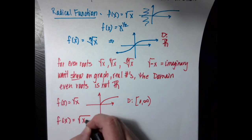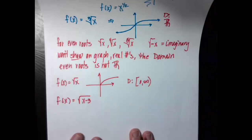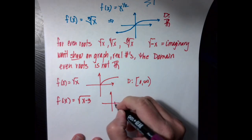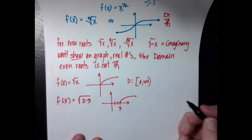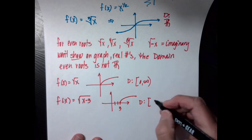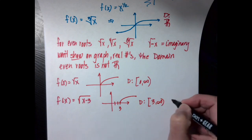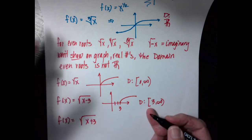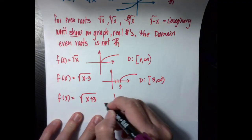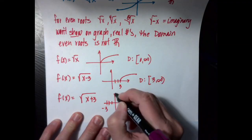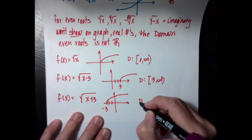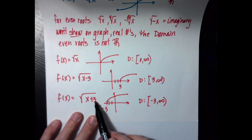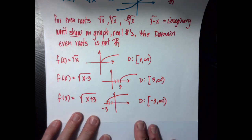Now we're going to translate things, just like we've done with every function we've studied. This is inside the function, which means it moves the opposite direction. So f of x equal to the square root of x minus 3 is going to be translated three units to the right, and the domain is also translated three units to the right: three to positive infinity. If I have f of x equal to the square root of x plus three — inside the function means opposite sign — the graph moves to negative three, and the domain is negative three to positive infinity, because negative three plus three equals zero.